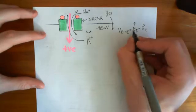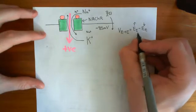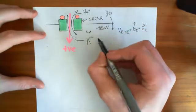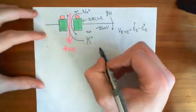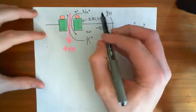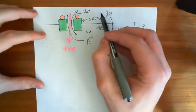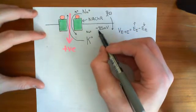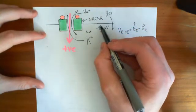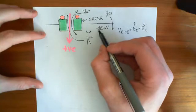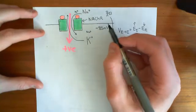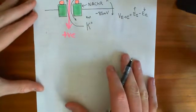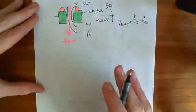So this value — the difference between them, how much different the intracellular electrical potential is compared to the extracellular electrical potential — is going to get less negative, more positive. So you're going to get depolarization.